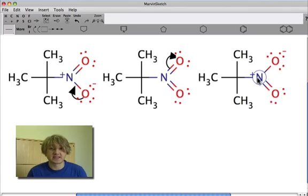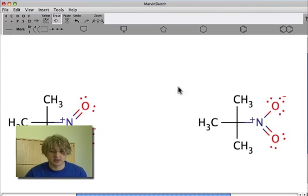So how do we designate this fully instead of drawing this invalid Lewis structure in the middle? The way we would actually designate this is shown here, where we draw both of those arrows in that same place.